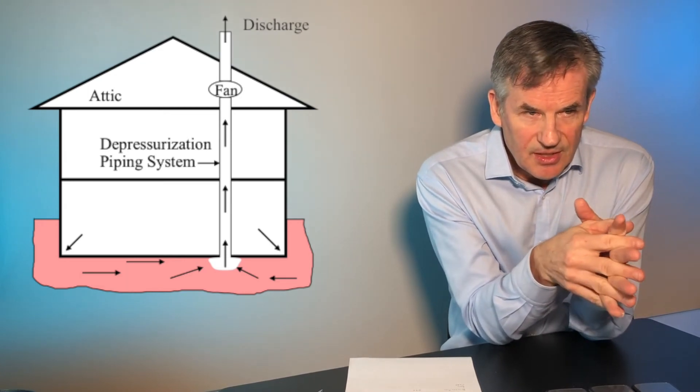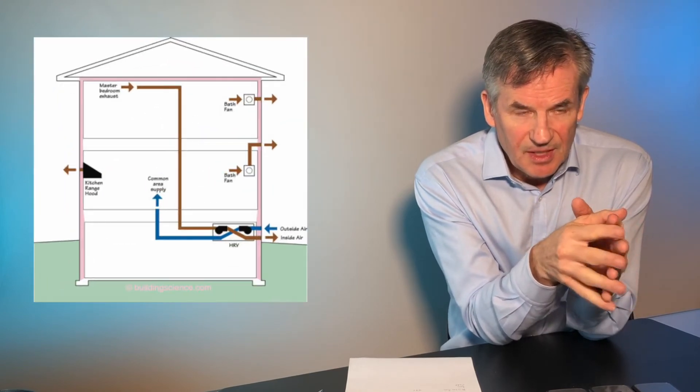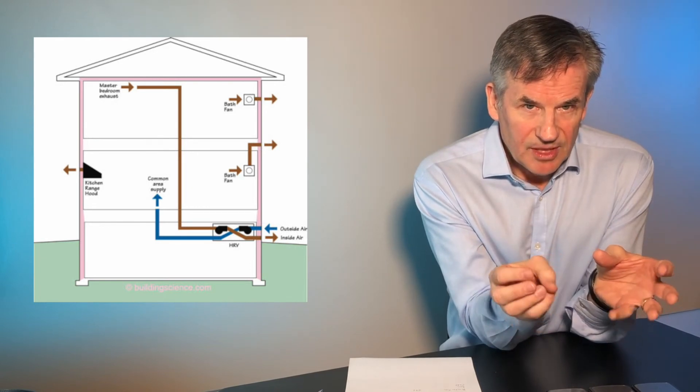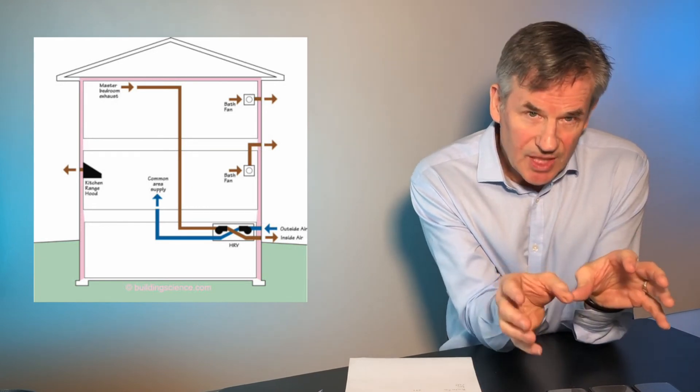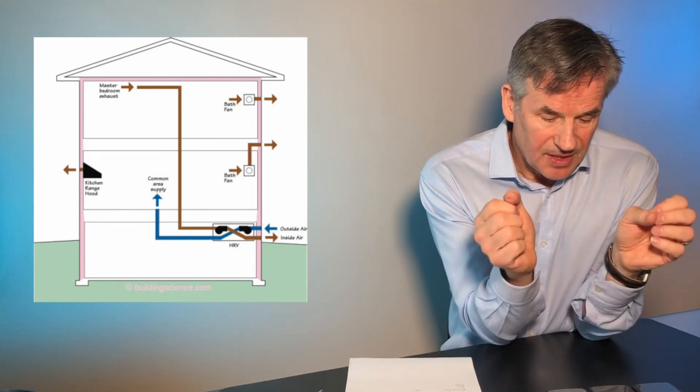The other way of mitigating radon levels is an HRV unit, and that exchanges your air for fresh air a lot more rapidly than without the HRV. So those are the two main ways of dealing with radon.